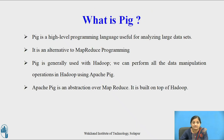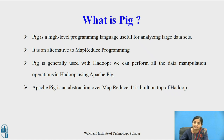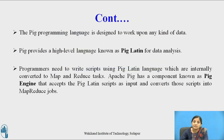What is Pig? Pig is a high-level programming language which is useful for analyzing large data sets — that is, data sets in the size of terabytes and petabytes. Pig is an alternative to MapReduce programming. It is generally used with Hadoop; we can perform all data manipulation operations in Hadoop using Apache Pig, but Apache Pig works on top of Hadoop. It is an abstraction over MapReduce. The Pig programming language is designed to work on any kind of data, and it provides a scripting language called Pig Latin for data analysis.